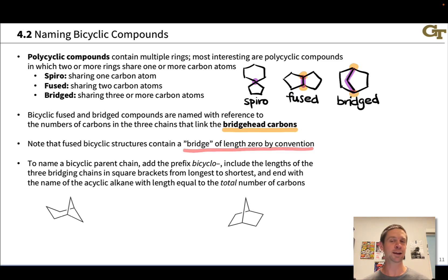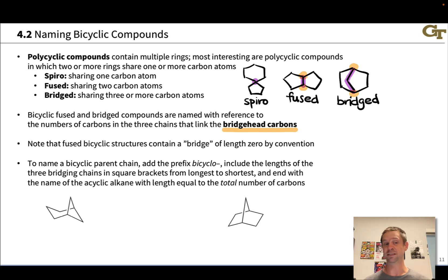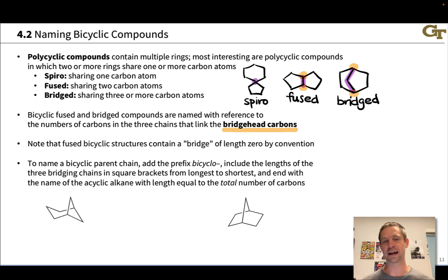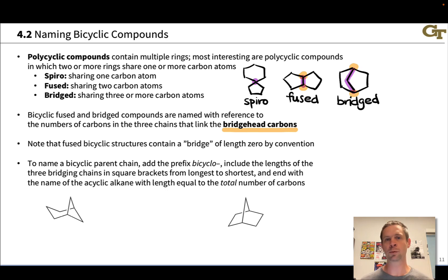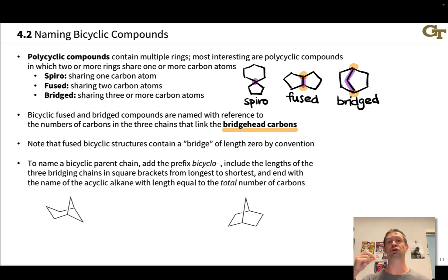The bridge-of-length-zero concept is important for naming conventions for bicyclic compounds — we include that in the name to keep things consistent. To name bicyclic compounds, we think of the bicyclic ring system as the parent chain, name it first, then name substituents using locant numbers and the typical suffixes like methyl, ethyl, propyl, etc. We don't count substituents like a methyl group when determining the ring system size, so it's a bicyclooctane rather than a bicyclononane.